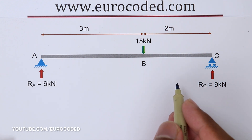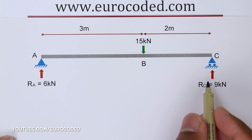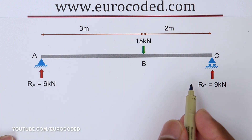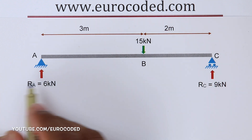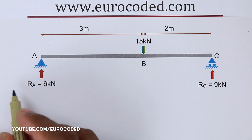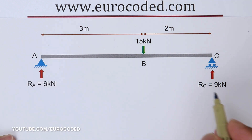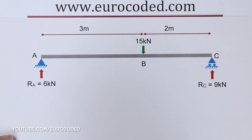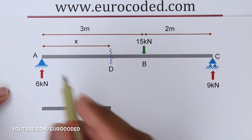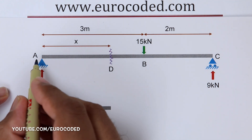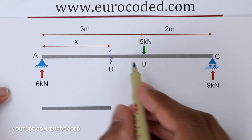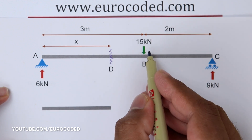We have looked at this problem in my previous videos. In this video I'm going to show you how to draw the bending moment diagram and the shear force diagram for this beam arrangement. If you want to know how to calculate these support reactions, click on the YouTube card here or follow the link in the description below. Let's consider the beam section from point A to point B where we have this externally applied force of 15 kN.